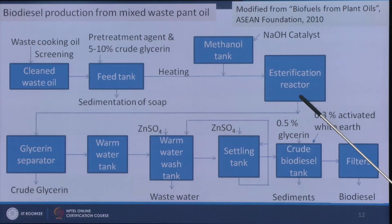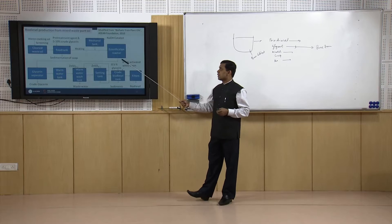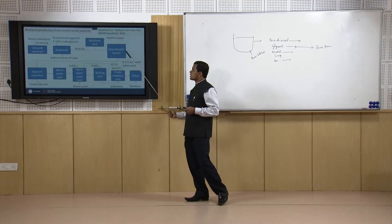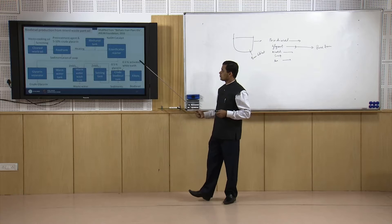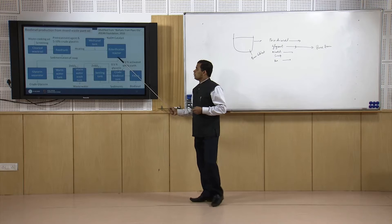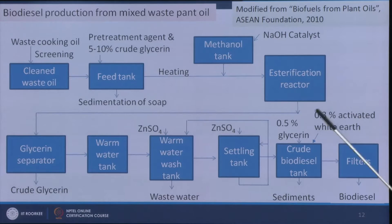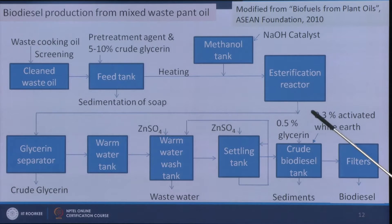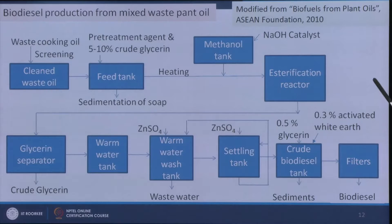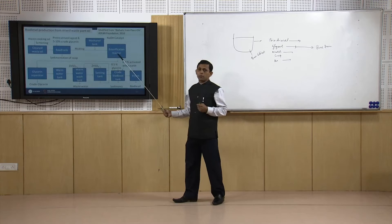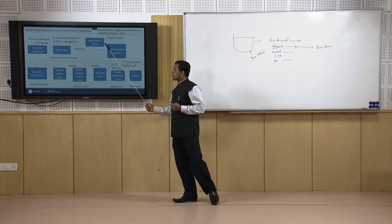In the transesterification reactor — which may be of tubular type — the typical residence time is around half an hour at 60 to 65°C. The basic transesterification reactions take place: triglycerides are converted to glycerol and fatty acid alkyl esters. Some unconverted alcohol and catalyst also remain. The product contains impurities so purification is needed. The desirable products are: first, biodiesel; second, glycerol; and third, methanol if methanol was used for the esterification reaction.